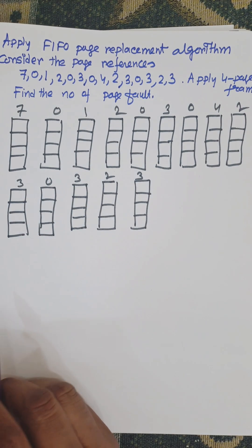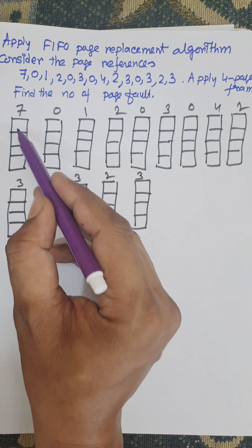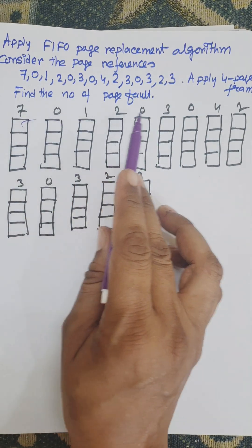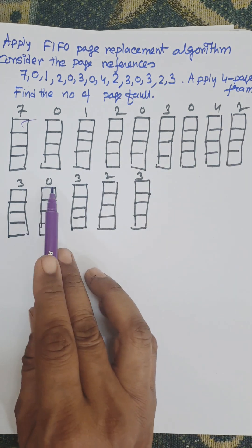First of all, we need to draw the page numbers, that is 4 page frames, and for each page reference: 7, 0, 1, 2, 0, 3, 0, 4, 2, 3, 0, 3, 2, 3.